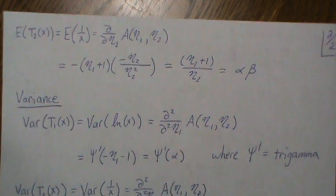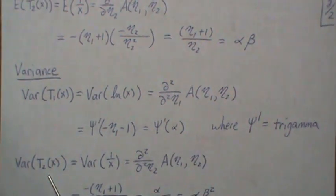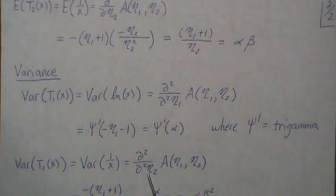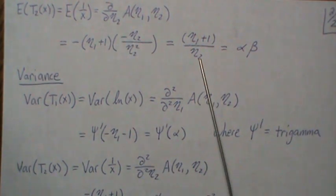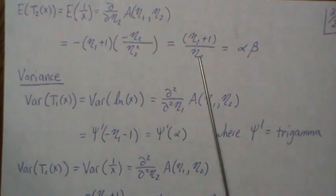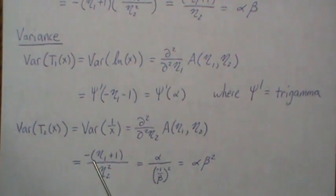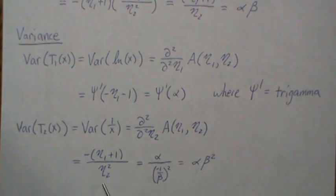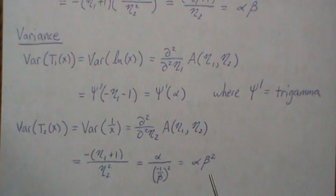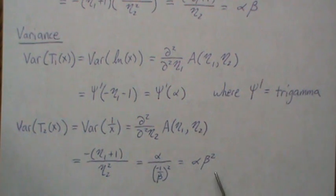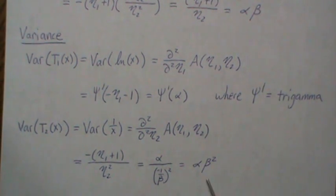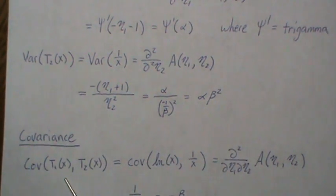The variance of the second sufficient statistic, Var(1/x), is the second partial derivative of the log partition with respect to η₂. Taking the partial of (η₁ + 1)/η₂ with respect to η₂ gives -(η₁ + 1)/η₂². Substituting η₁ = -(α+1) and η₂ = -1/β yields α·β². Again, since 1/x follows a gamma distribution when x is inverse gamma, this matches the variance of a gamma distribution, α·β², as it should be.